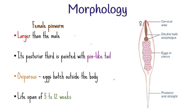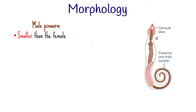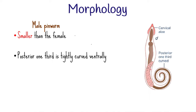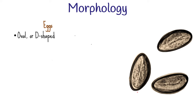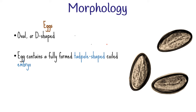The male worm is smaller, measuring about 2 to 5 millimeters long and 0.1 to 0.2 millimeters wide. The posterior one-third is tightly curved ventrally and carries a copulatory spicule. The male pinworm dies soon after fertilization, and its lifespan is about 7 to 8 weeks. The eggs can be oval or D-shaped. The shell is thick and the egg contains a fully-formed tadpole-shaped coiled embryo. These eggs can become infectious 6 hours after being deposited on the perianal skin, and they can remain viable for about 2 weeks under cool moist conditions.